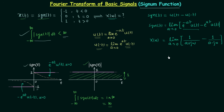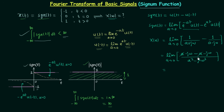Simplifying the expression: combining the two fractions gives the limit as a tends to 0 of [(a − jω) − (a + jω)] divided by (a² − j²ω²). In the numerator, a and −a cancel, leaving −2jω. In the denominator, since j² = −1, we have a² + ω².